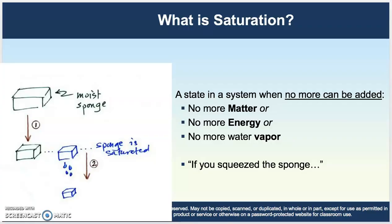When it feels very humid outside, it feels like a wet sponge. A moist sponge when you squeeze it doesn't let go of any water, but a saturated sponge really drips out water. A saturated sponge can absorb no more matter. Similarly, a saturated atmosphere can't take in any more water vapor — it is at its equilibrium point. If you applied any pressure to this saturated atmosphere, it would just drip out water as condensation.